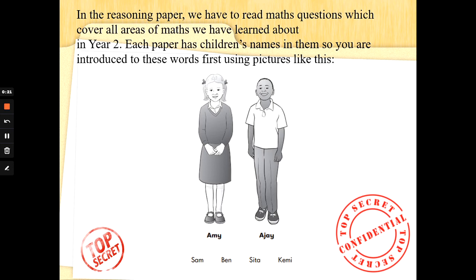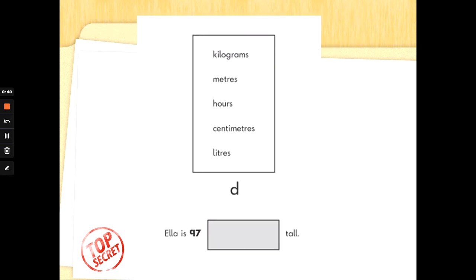Each paper has a page with children's names on them so you are introduced to these words using pictures like this first. So here we've got, there's always a main girl and boys, we've got Amy and AJ here and then we've got Sam, Ben and Sita and Kemi's name underneath so you know that if you see these words, those are not maths words, those are children's names. And then every special agent task with its reasoning will start with some questions where your teacher reads them and there is no written question.